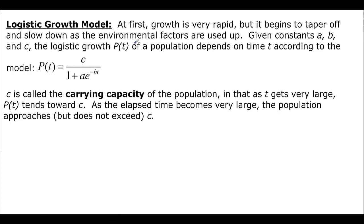Here's the new one. Logistic growth model. At first, growth is very rapid but it begins to taper off and slow down as the environmental factors are used up. Given constants A, B, and C, the logistic growth population depends on time according to this model. C here is what we call the carrying capacity of the population. As t gets really large, it tends towards C. We have C over 1 plus A times e to the negative bt. That's going to always be the way a logistic model sets up. Our population is going to be really close but never quite get to C.